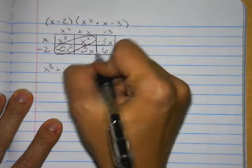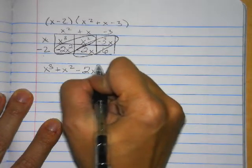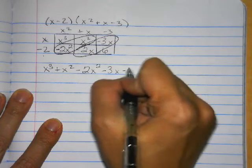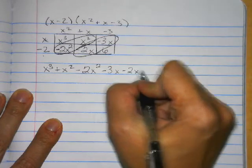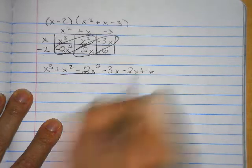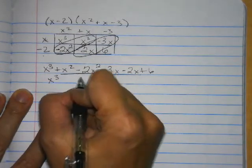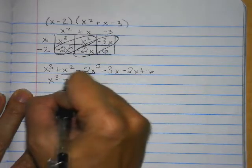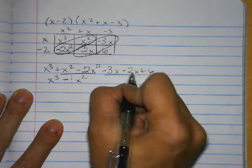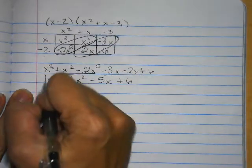I forgot my x on that one. So I'm going to go ahead and write my minus 2x squared. And then I have minus 3x and minus 2x, and then a plus 6. So I can in fact collect like terms twice: x to the third, x squared minus 2x squared is going to be negative x squared. A negative 3 and a negative 2 is negative 5x plus 6.